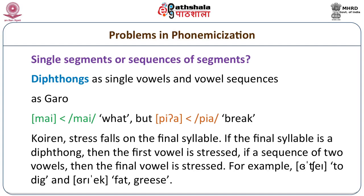In Koeren, a syllable which occurs in the final position is stressed. What we find is that if it is a diphthong, then the stress falls on the first vowel. But if it is a sequence of two vowels, then the stress falls on the second vowel, as we notice in the two examples: /ochai/ means 'to dig,' but /oriek/ means 'fat and grease.'